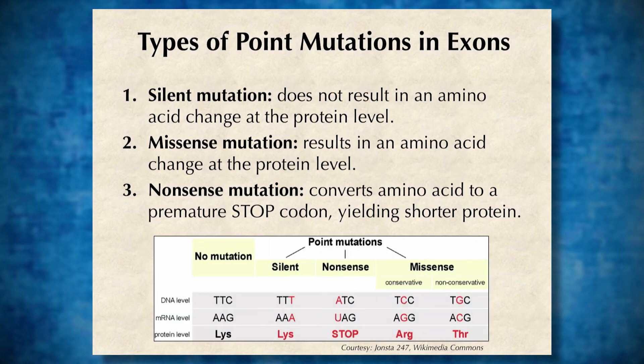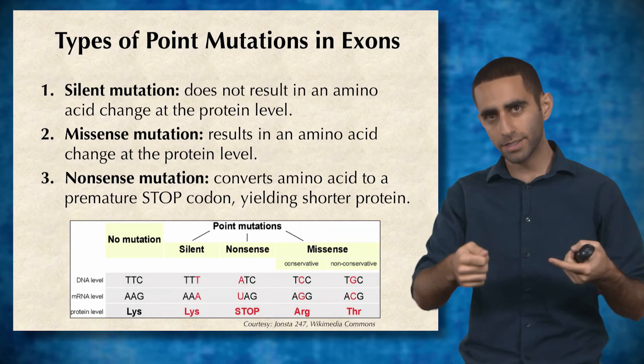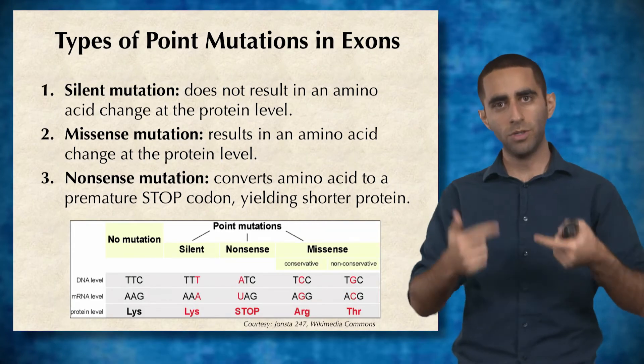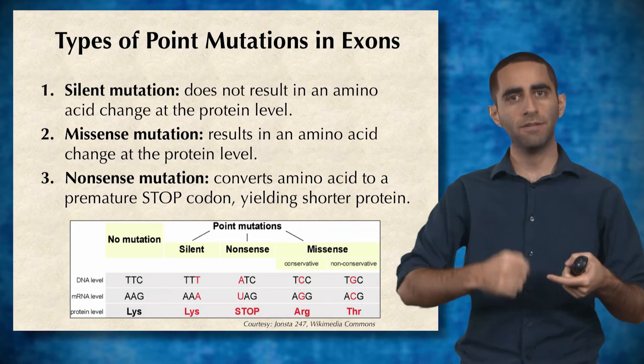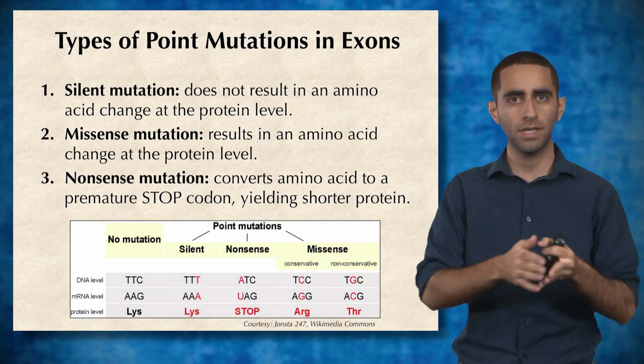In addition to classifying variants as SNVs or SNPs, we also want to classify them based on what function the given variant has. SNVs can have three different types of functions. They could be a silent mutation, which does not result in an amino acid change at the protein level — the DNA has a mutation, the RNA carries the same mutation, but that mutation doesn't affect the amino acid sequence in the protein.